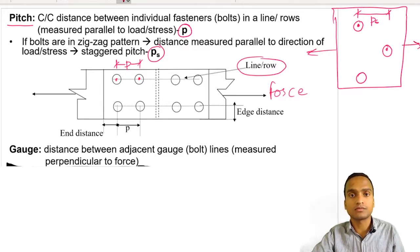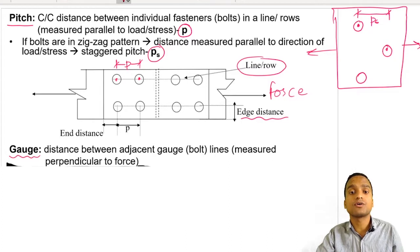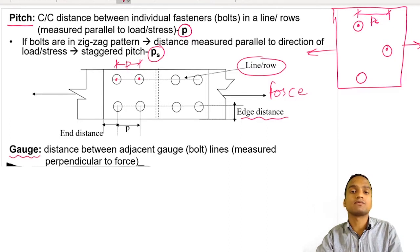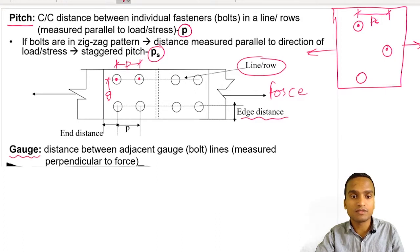This is how pitch is calculated, as per the code. Another very important parameter is gauge. Gauge is the distance between adjacent bolt gauge lines measured perpendicular to the force. Pitch is measured parallel to the direction of force — P for pitch and P for parallel. Gauge is measured perpendicular to the direction of force, and the center-to-center distance between two consecutive bolts perpendicular to the force is the gauge, represented by letter G.